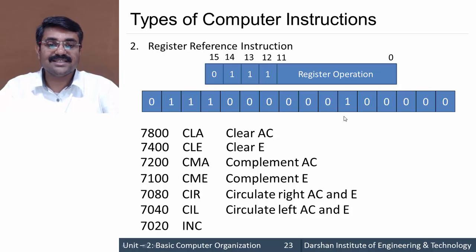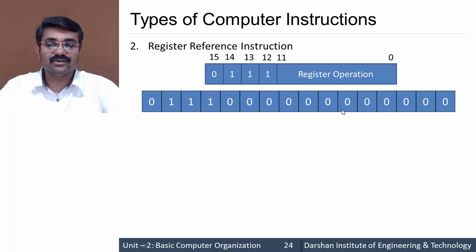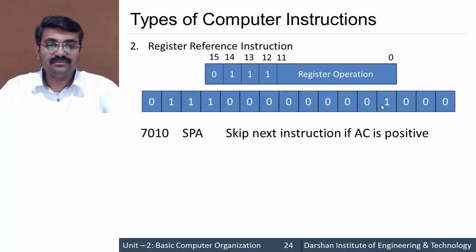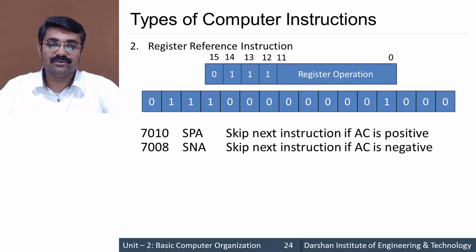Code 7020 is INC — increment the content of the accumulator. Code 7010 is SPA — skip the next instruction if AC is positive: if the accumulator content is positive, the next instruction in the program sequence is skipped. Code 7008 is SNA — skip the next instruction if the accumulator is negative.